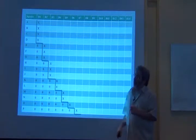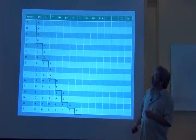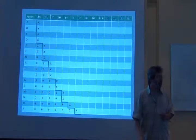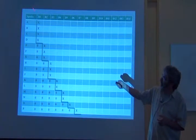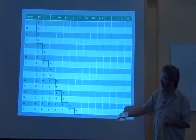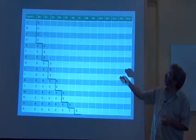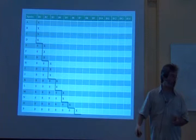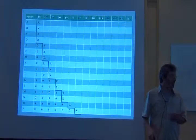So this species accumulation curve method essentially uses this information. This is a typical presence absence matrix. I've got my species here and my effort here. Imagine this is days.